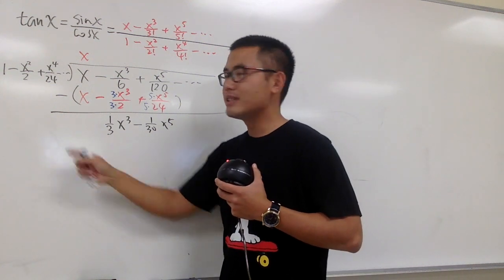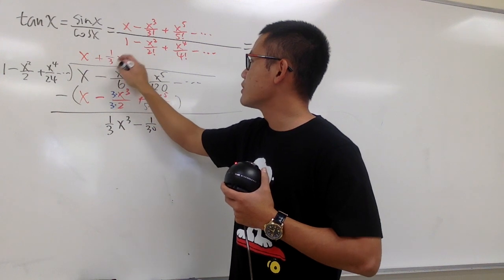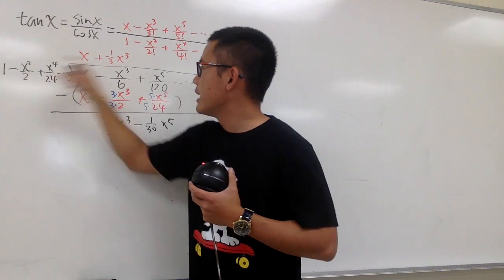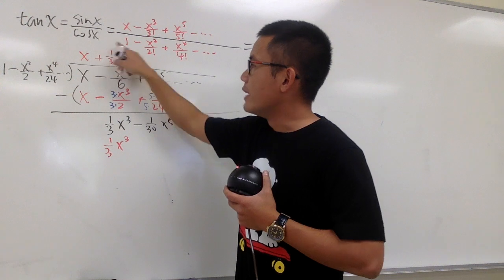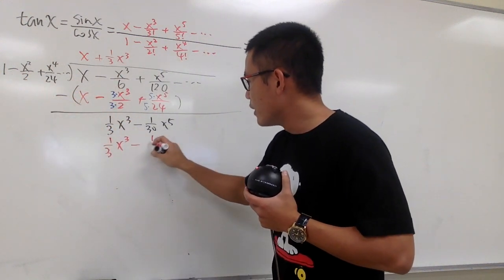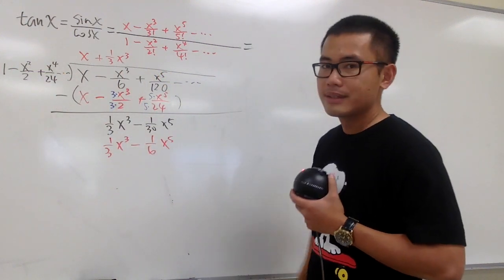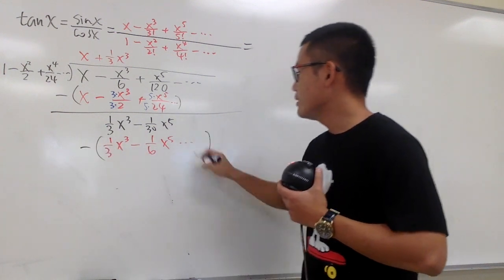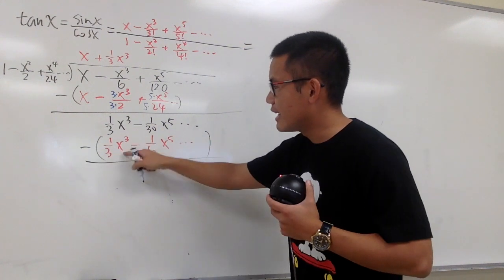Next, we compare this with 1, so we need plus 1 third x to the third power. Take this and multiply it with everything. We first get 1 third x to the third power. Next, 1 third times negative 1 half is negative 1 over 6. And x to the third power times x squared is x to the fifth power, and so on. After subtracting, the x to the third power terms cancel — that's good.